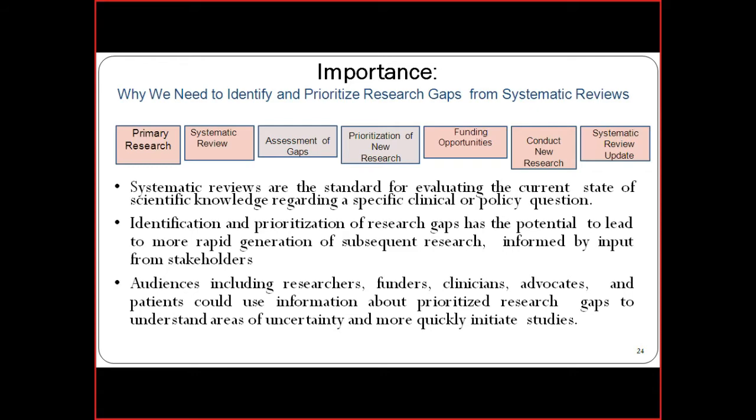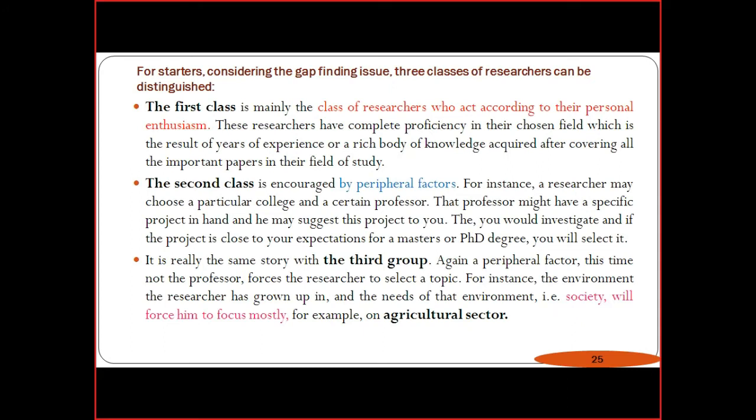For starters entering research gap identification, there are three classes. The first class consists of researchers who act according to personal enthusiasm — every person should have their own enthusiasm and motivation, wanting to find the solution to a problem. The second class is encouraged by peripheral factors — in institutions, when one or two faculty members complete research, the remaining become interested, motivated especially by professorship and promotion.